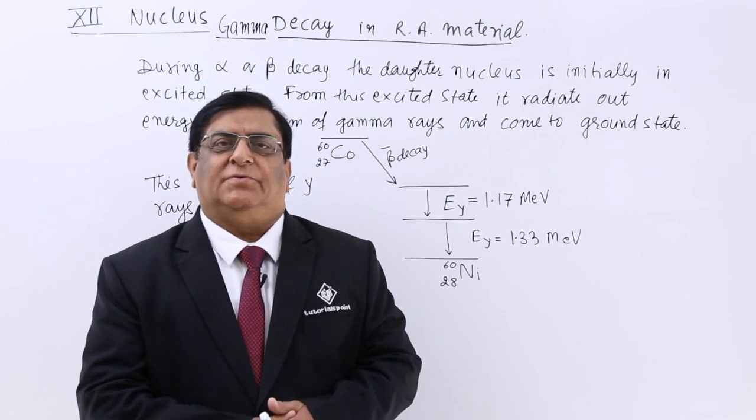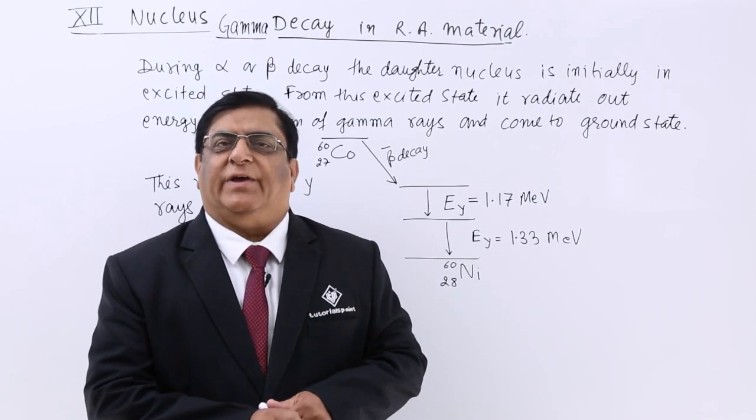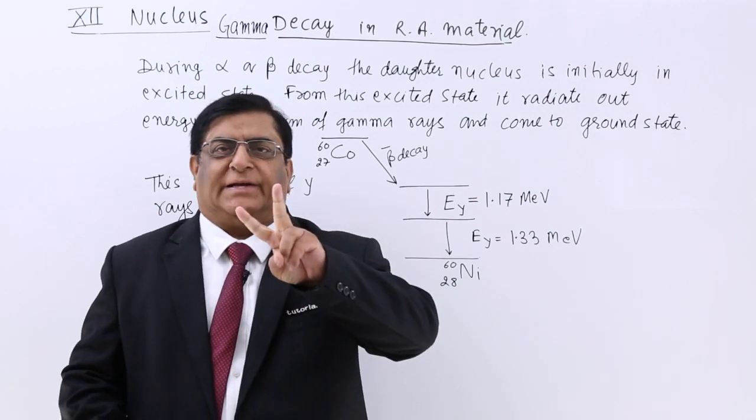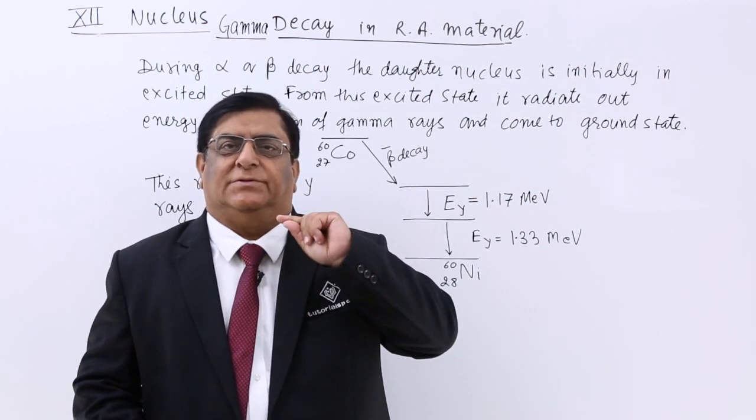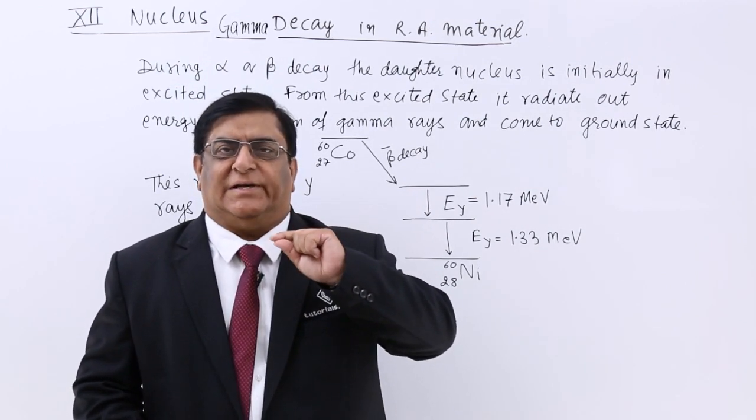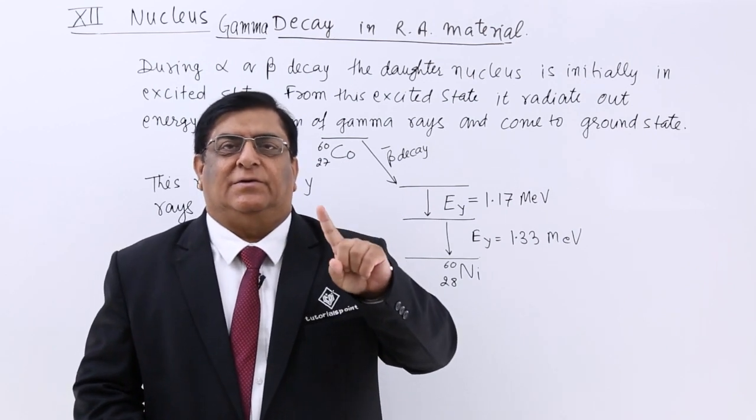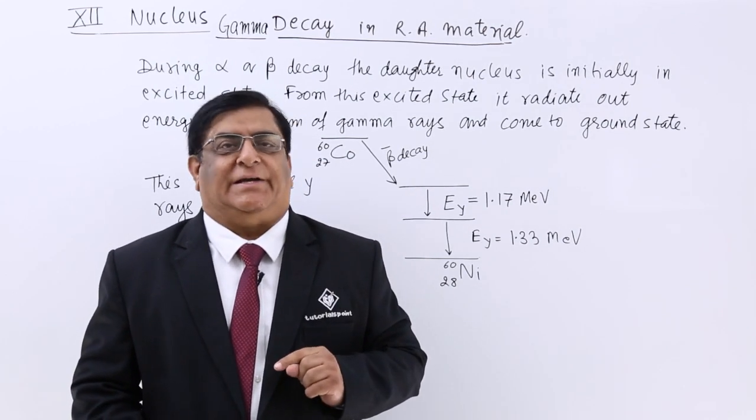In decay of radioactive nucleus, we have seen two types of particles can be ejected out. One was helium nucleus and that ejection we name it as alpha decay.